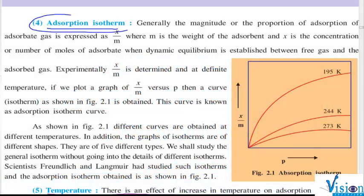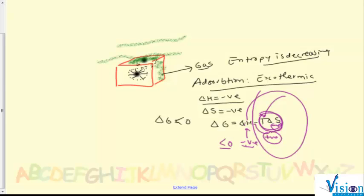Our next point is adsorption isotherm. In adsorption isotherm, when we talk about adsorption, certain adsorption we say is in more proportion, certain in less proportion. But how do we determine that this adsorption is in more proportion or less proportion? To determine that, one parameter is important - that parameter is known as x by m.